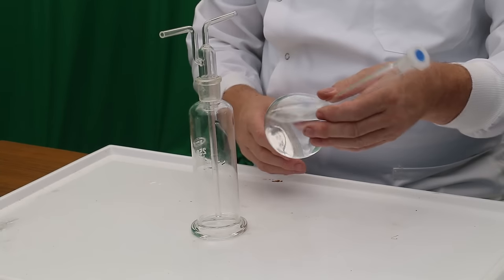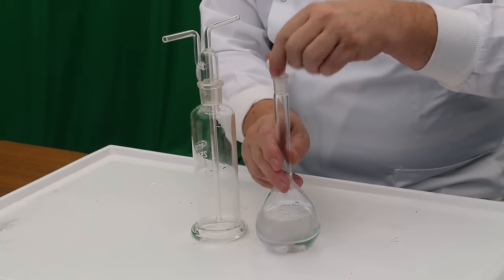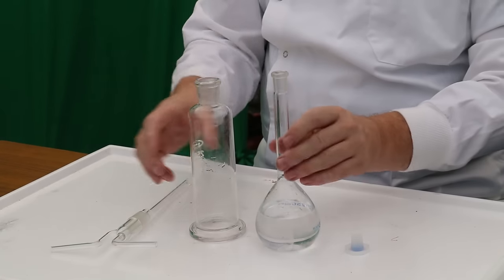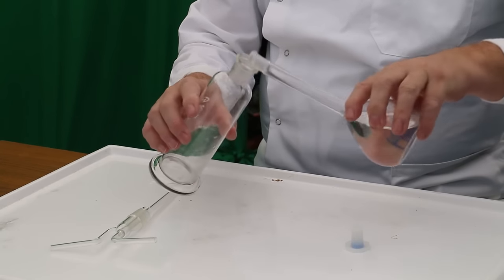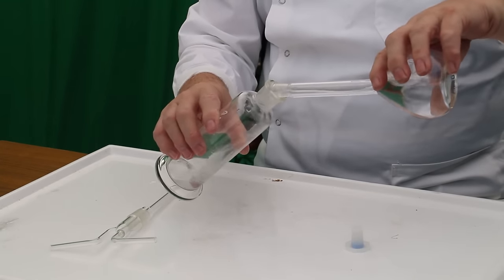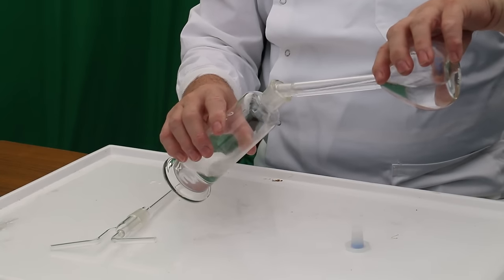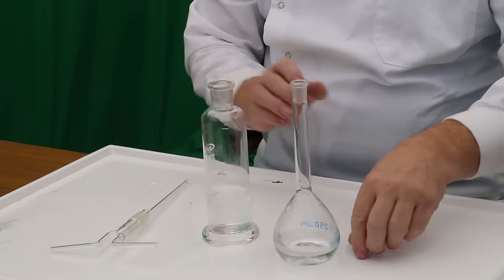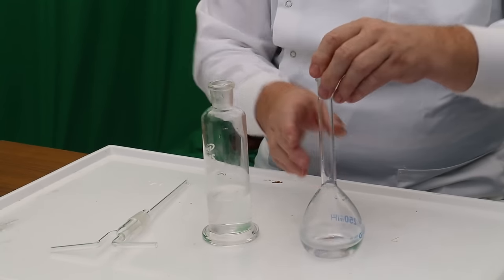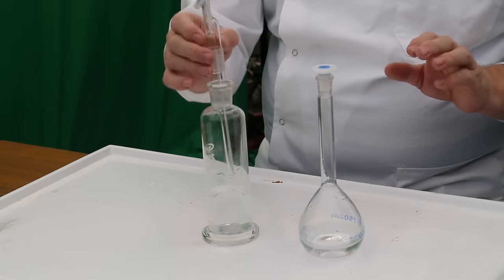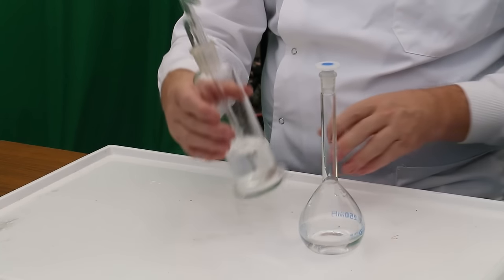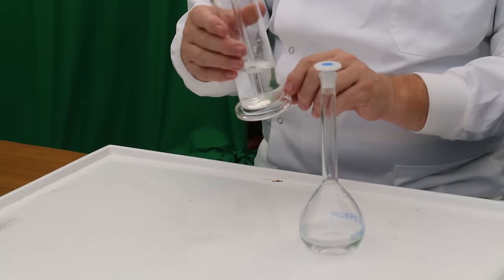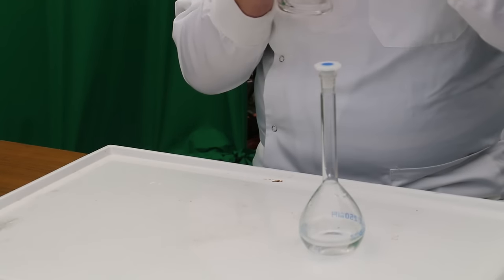Now that we've made our lime water and it's been filtered, what we're going to do is see if it works. We're going to test for carbon dioxide. What we're going to do is pour some of the lime water into this flask, and then I'm going to blow into here to see if this lime water will turn cloudy.